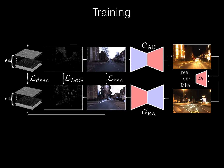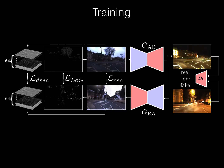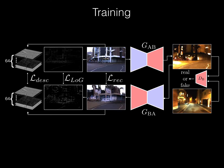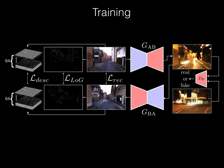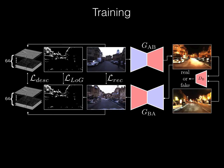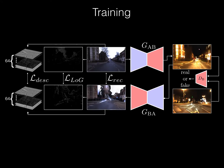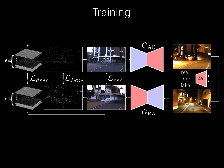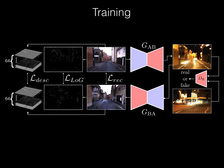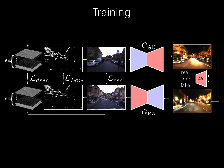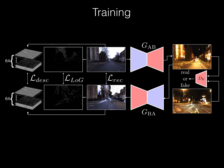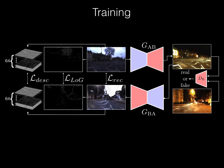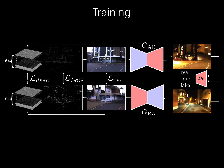A network is trained to output synthetic images optimized for feature matching given only a set of unpaired RGB images of source and target conditions. This image transforming filter is explicitly designed to aid and abet feature matching using a new loss based on SURF detector and dense descriptor maps. We use modest target training data, which emulates scenarios where mapping is expensive, time-consuming or difficult.